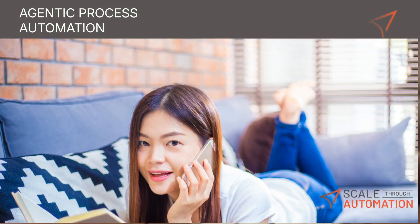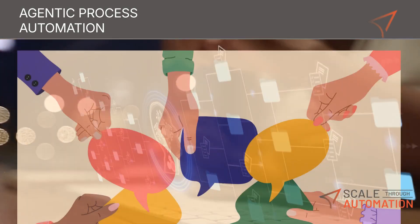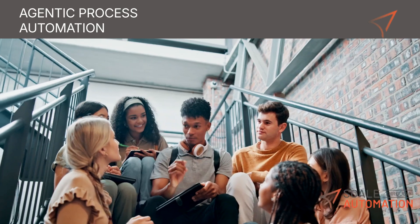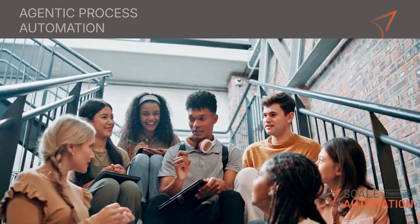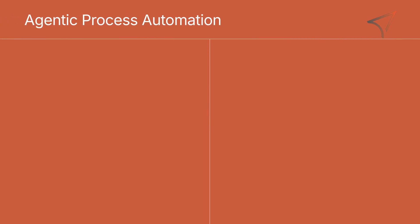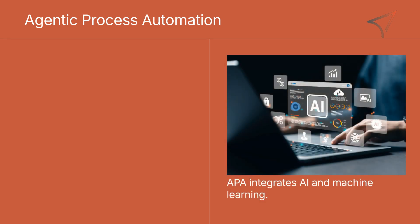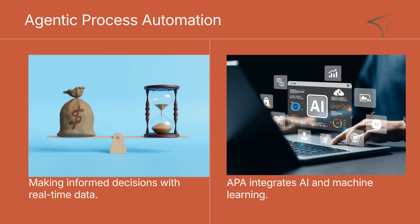So get comfortable, and if you have questions along the way, drop them in the comments — we love interactive discussions. Agentic Process Automation takes traditional automation to the next level. Unlike conventional systems that strictly follow preset instructions, APA integrates elements of artificial intelligence and machine learning. This means it's not just automating tasks; it's making informed decisions based on real-time data. Picture an employee who continuously learns and adapts to improve efficiency — APA is that employee, but in digital form.